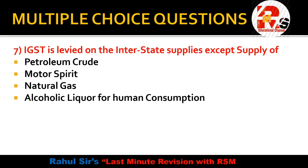IGST, that is Integrated Goods and Service Tax, is levied on interstate supplies. It applies on petroleum crude, motor spirit, natural gas, and alcoholic liquor for human consumption — except one: IGST is not applicable on alcoholic liquor for human consumption.